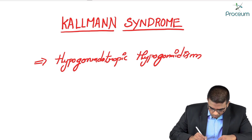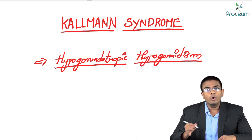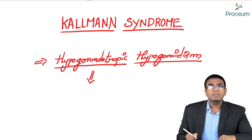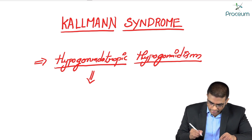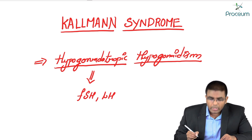What exactly is meant by hypogonadotropic hypogonadism? Hypogonadotropic means there is a decreased production of gonadotropic hormones. The gonadotropic hormones are FSH and LH — these are the gonadotropic hormones.